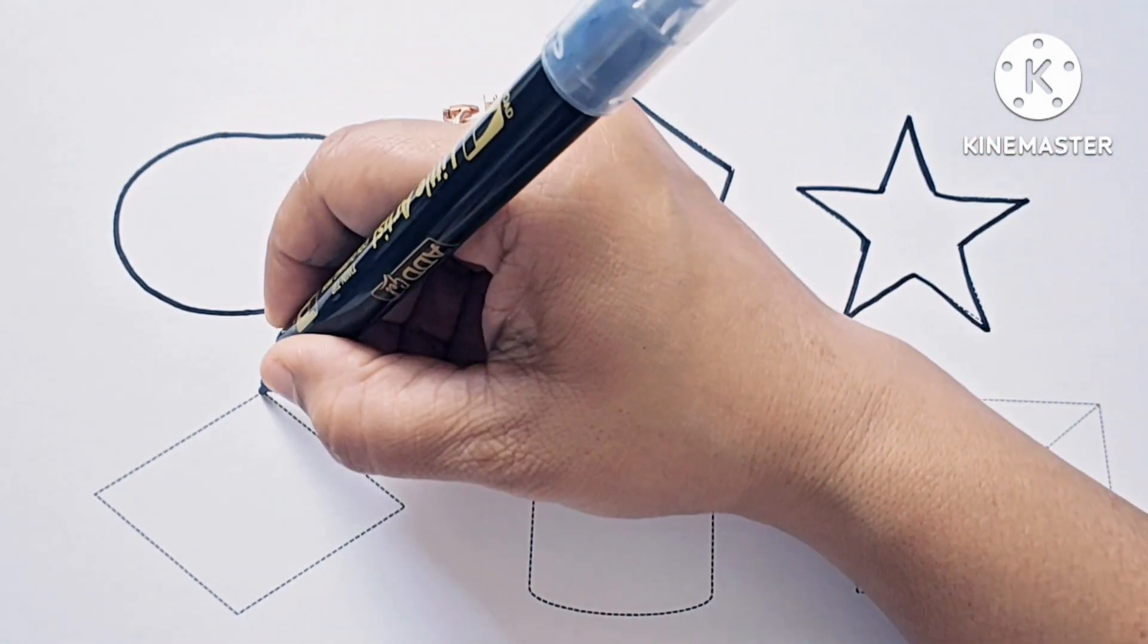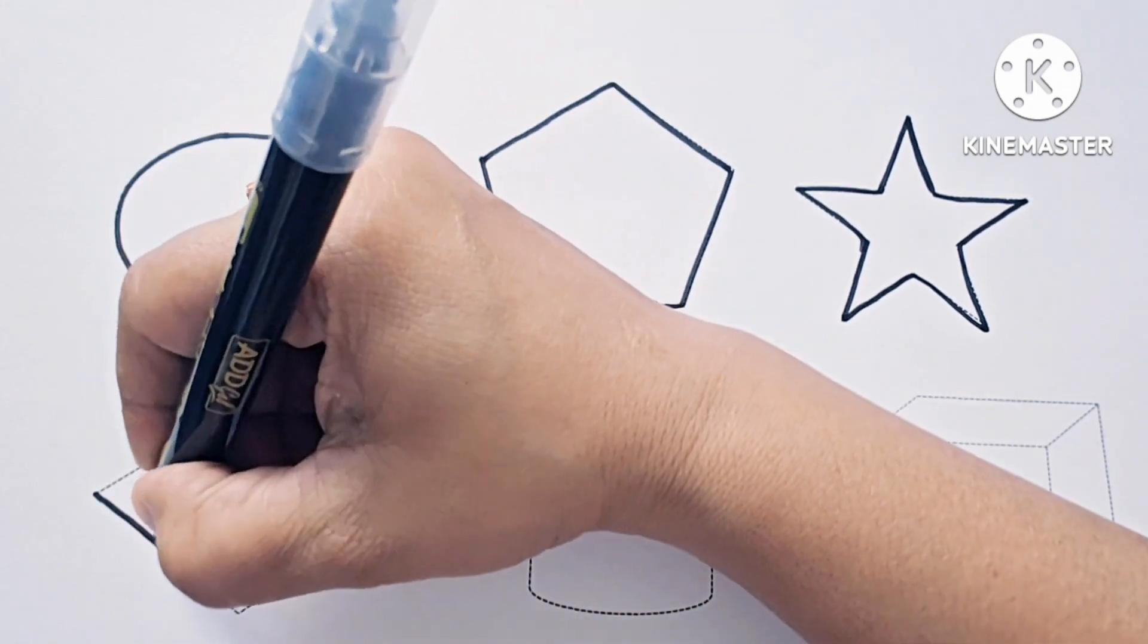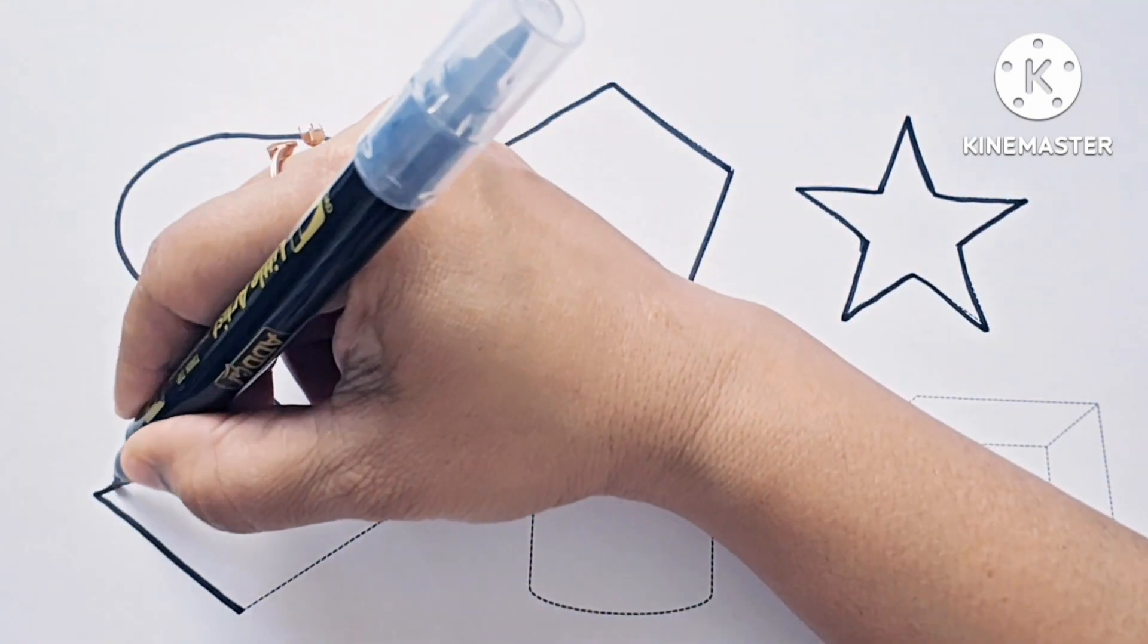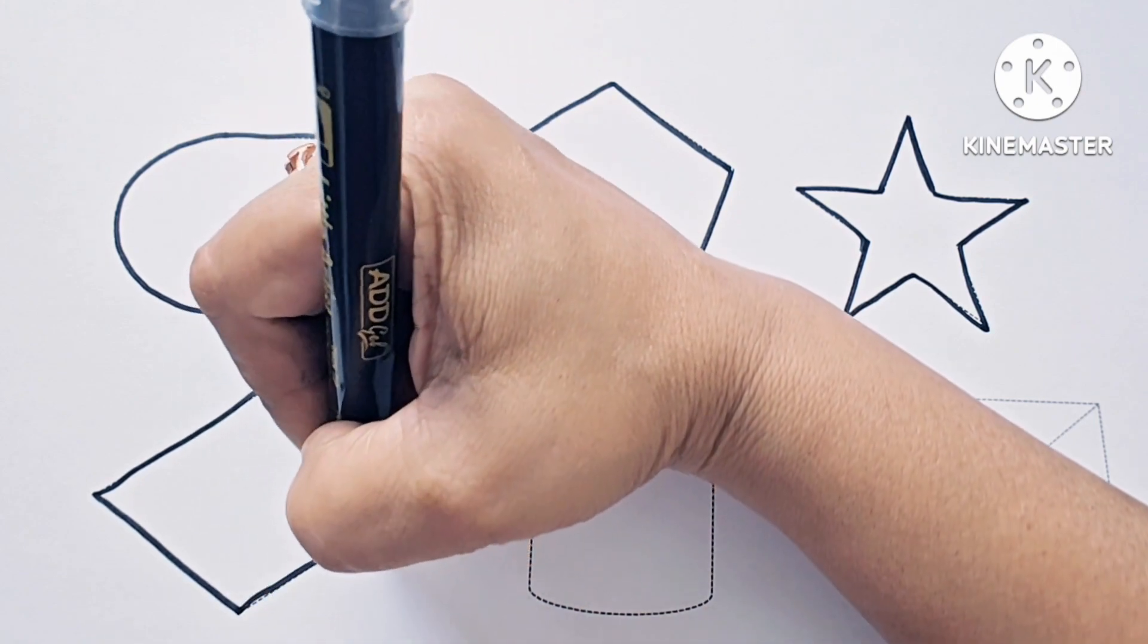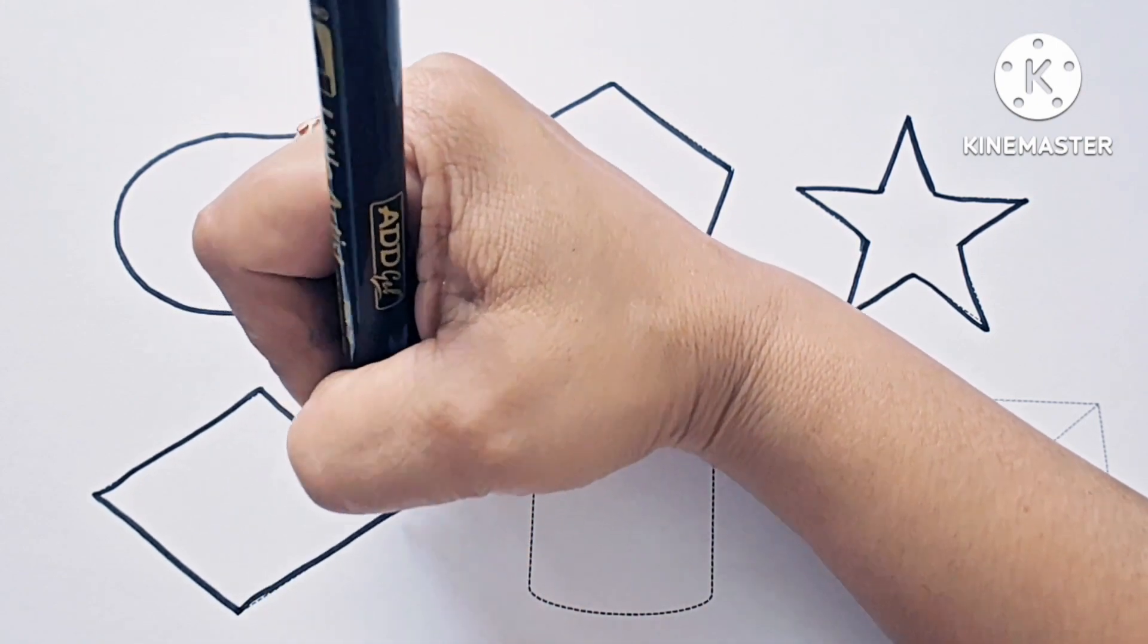This is rhombus, it has four sides. It is also called diamond, it is a 2D shape.